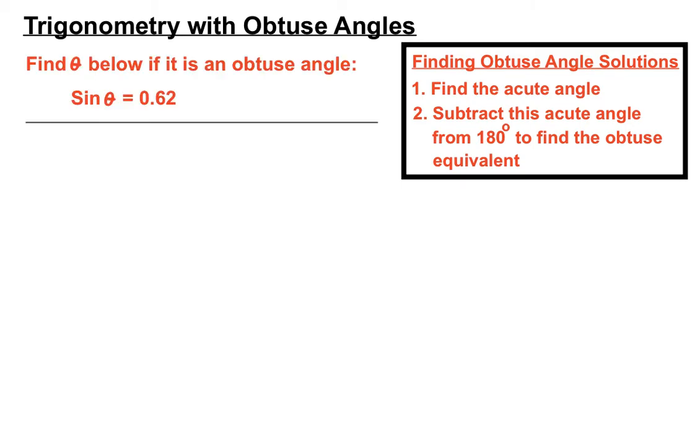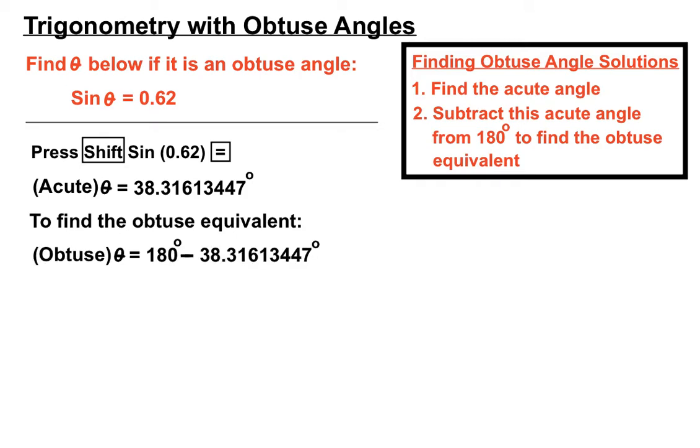sin θ equals 0.62. Now I think you'll find from your previous trig work that when you're finding an angle you have to press shift sin cos or tan. So we'll press shift sin 0.62 into the calculator then press equals. That'll give us an acute θ, a normal answer of 38 point something degrees. Now that's step one. We've found an acute angle. But the question wanted us to find an obtuse angle. So let's take away that from 180 degrees and we'll find the obtuse equivalent of that, 140 degrees.